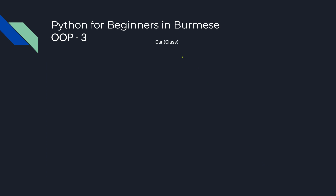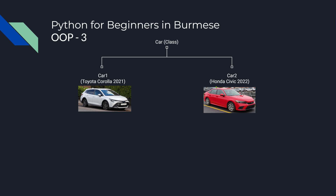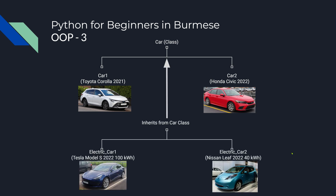A class is called a blueprint. When you create an object — for example, car one is a Toyota with color, make, and year 2021. Car two is a Honda Civic with make Honda, model Civic, year 2022. So we will look at the car class in code. Let's go.